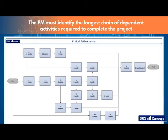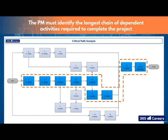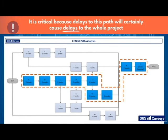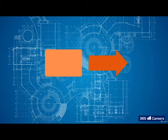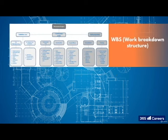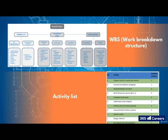What you must do, as a project manager, is identify the longest chain of dependent activities required to complete the project. This is called the critical path. It is critical because delays to this path will certainly cause delays to the whole project. One of the best ways to plot the critical path is to put the information in a network chart with boxes and arrows. This works well because it shows all the tasks and all the durations in the boxes and all dependencies, the arrows, making it as easy as pie to chart a critical path. Okay, using our work breakdown structure and activity list, let's begin.